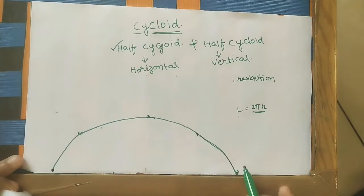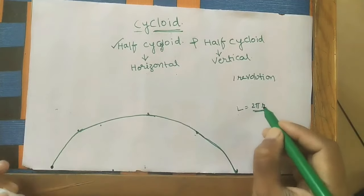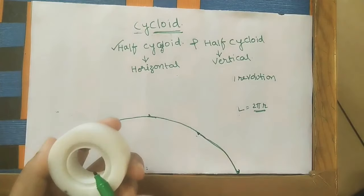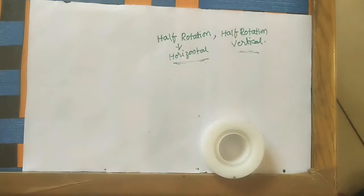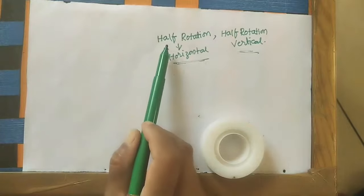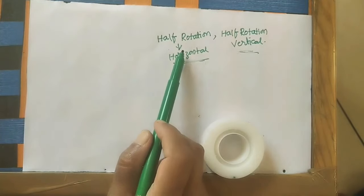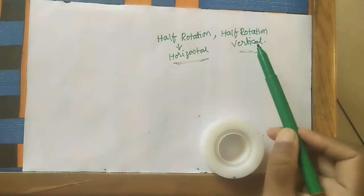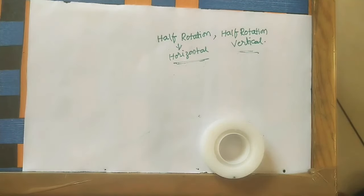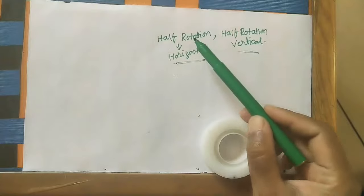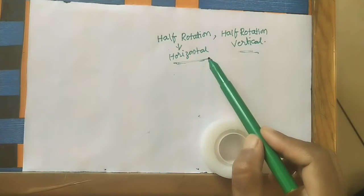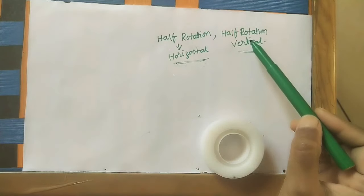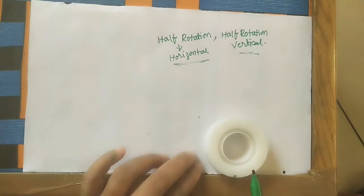If you join all these P positions, the path of this P point is called a cycloid. For one complete revolution it is moving a length equal to the circumference of the circle, that is 2πr. We have a formula for calculating this horizontal length. Now we had to do half cycloid in the horizontal direction and half cycloid in the vertical direction.